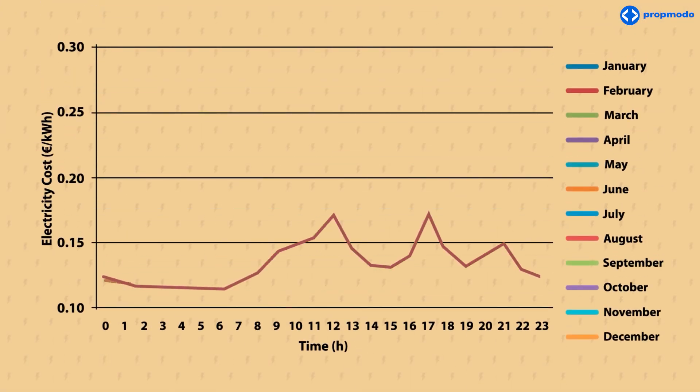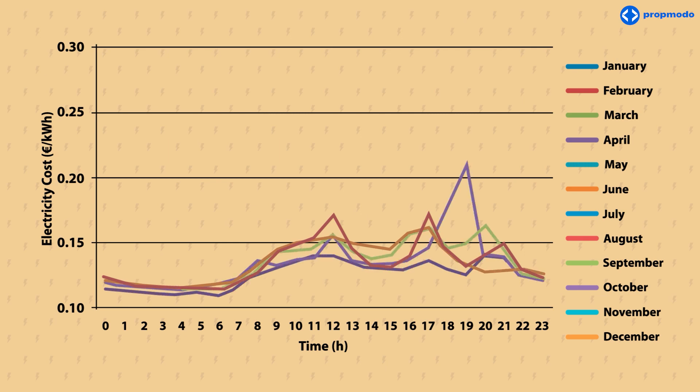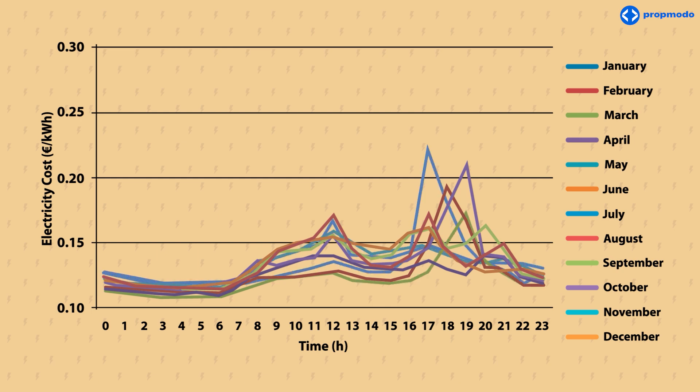Our energy usage spikes in the afternoons and for that reason, energy costs are elevated at that time. Plus, the increase in renewable energy production has created variability in energy supplies.